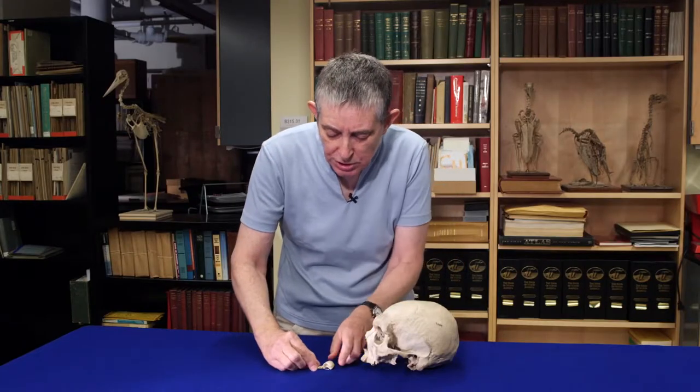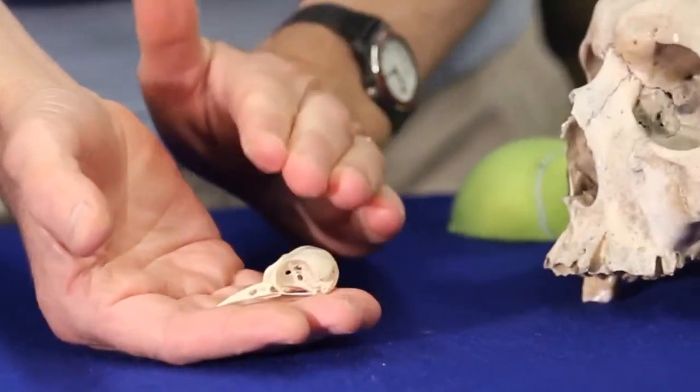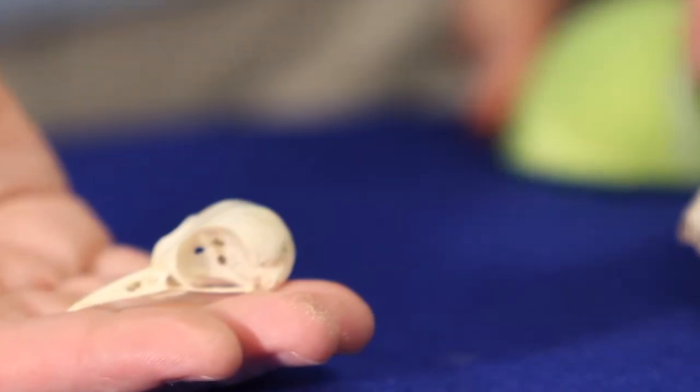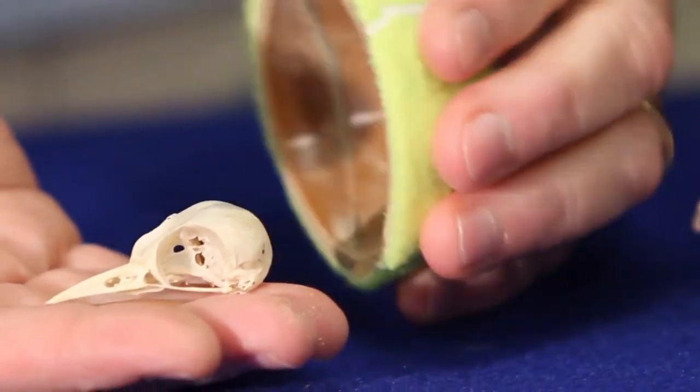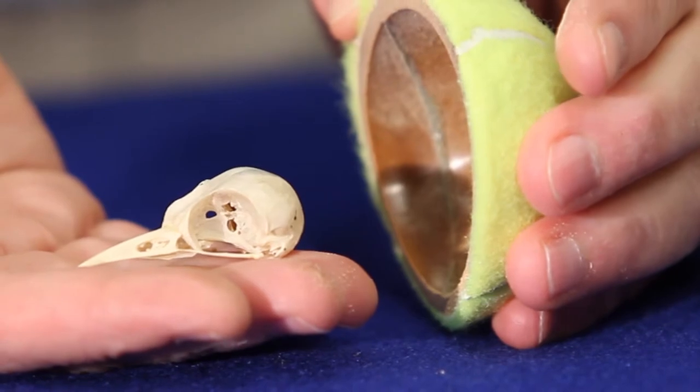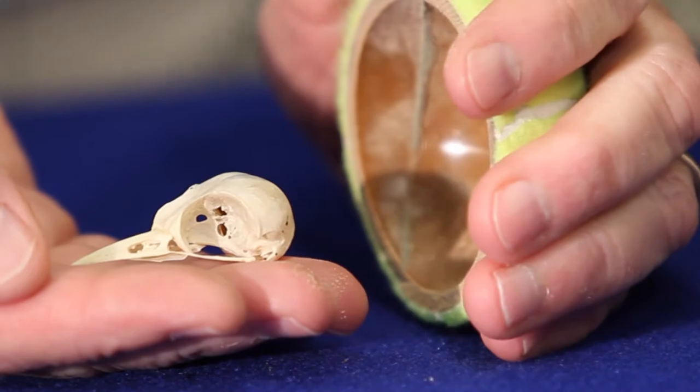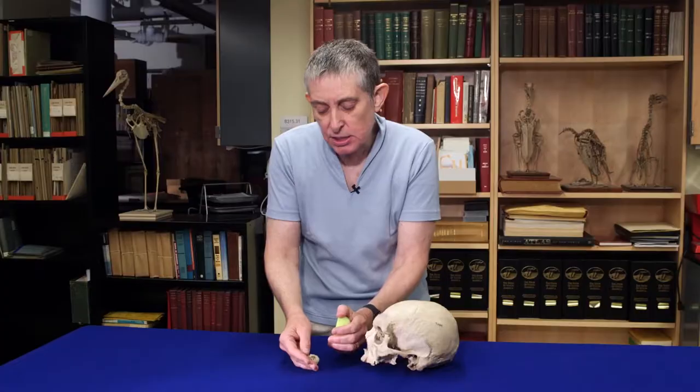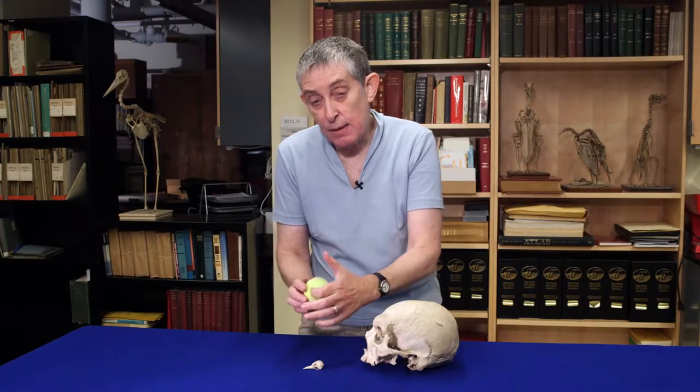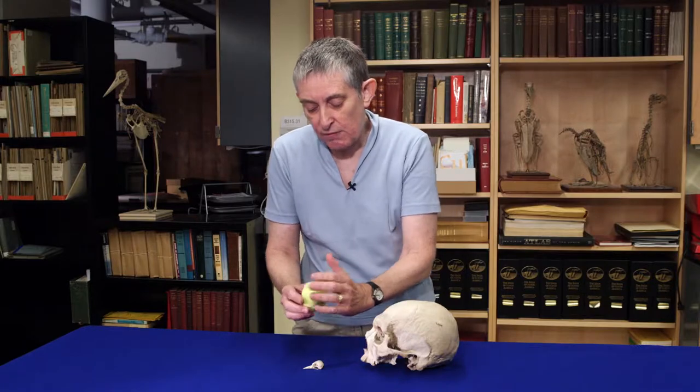If we look at the acorn woodpecker skull, you can see that the back of the skull here, that is protecting the brain, is actually oriented more in this direction here. So that as the woodpecker pecks and the brain sort of moves forward and backwards in the skull, then it's the entire area of this hemisphere that is the area of contact.